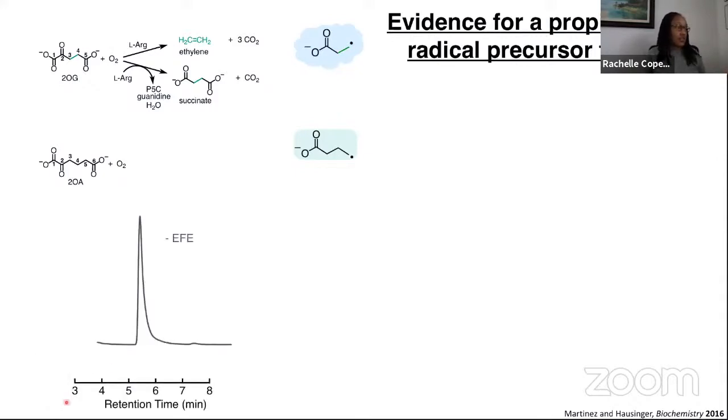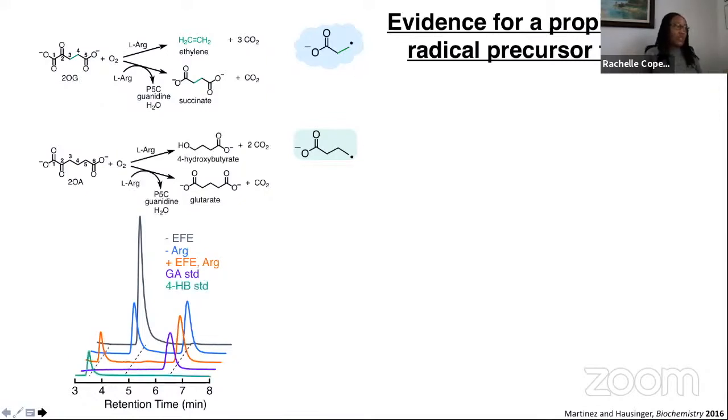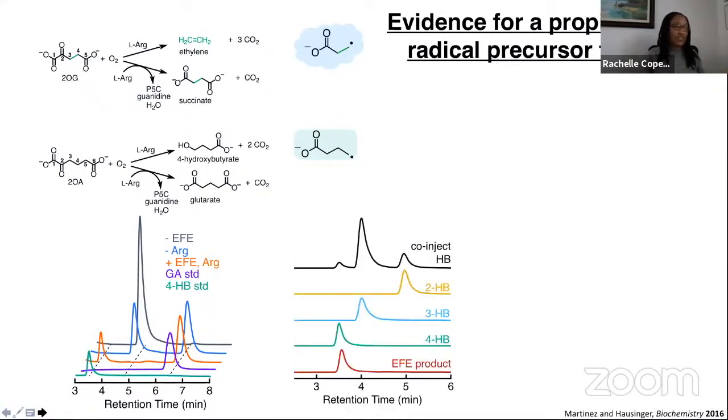I'll show you the chromatogram results here. Without EFE presence, we see just the substrate 2-OA. With EFE presence, we see consumption of the substrate and production of a product which, based on its mass and its retention time, we assign as glutarate. So we're seeing essentially the analogous reaction of 2-OG going to succinate and 2-OA going to glutarate, just one methylene unit longer. When we include arginine in the EFE reaction, we see yet another product which, based on its mass and retention time, we assign as being 4-hydroxybutyrate. To verify the regiochemistry of this product, we also compared it to standards of 3 and 2-hydroxy, and we can see clearly that our EFE product is the 4-hydroxybutyrate.